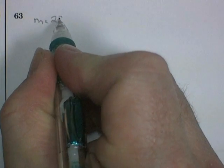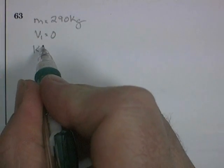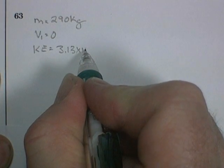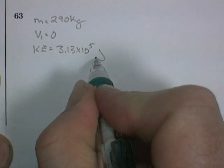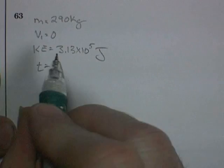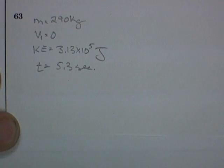Let's list what we know. Our mass is equal to 290 kilograms. It starts from rest. Velocity initial is equal to zero. It acquires a kinetic energy equal to 3.13 times 10 to the 5 joules. And it gets to the bottom of the hill in a time of 5.3 seconds. Not much of a ride, but it could be exciting.